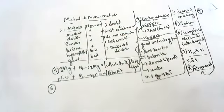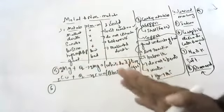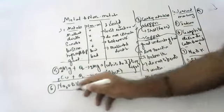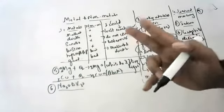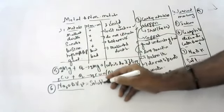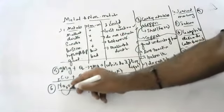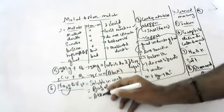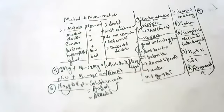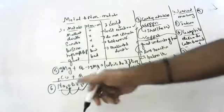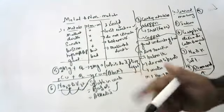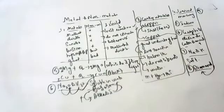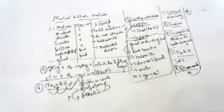Name two metal oxides that are soluble in water. Normally metal oxides are not soluble, but sodium oxide and potassium oxide are soluble in water. Metallic oxides are bases. Bases which are soluble in water are called alkalis. All alkalis are bases, but not all bases are alkalis - because to be an alkali, the base must be soluble in water.